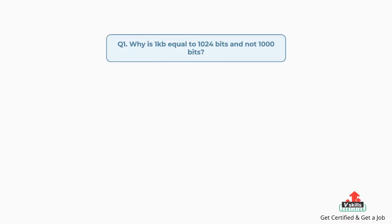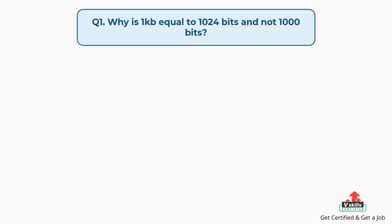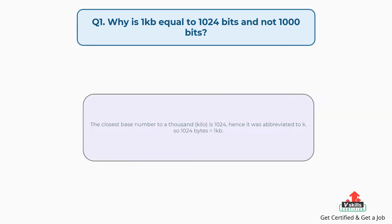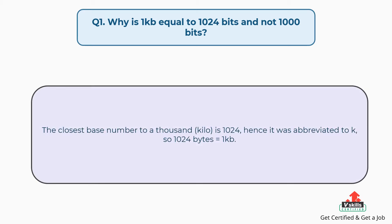Question number one: why is 1KB equal to 1024 bytes and not 1000 bytes? The answer is, the closest base number to 1000 is 1024, hence it was abbreviated to K, so 1024 bytes equal to 1KB.